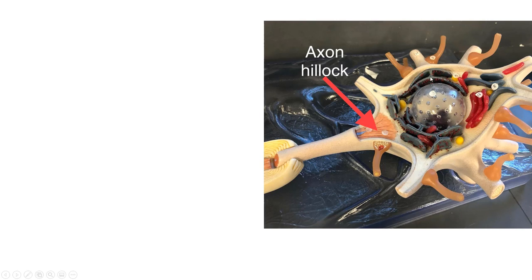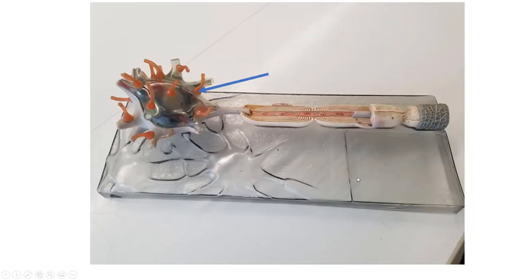Remember, neurons have specialized rough ER called Nissl bodies. That does it for this model. Remember there are different structural types of neurons—this is a multipolar neuron. Multipolar neurons make up motor neurons and interneurons. However, since we can identify Schwann cells here and not oligodendrocytes, this tells us this is the peripheral nervous system and this is a motor neuron, not an interneuron.